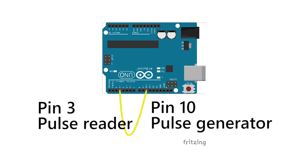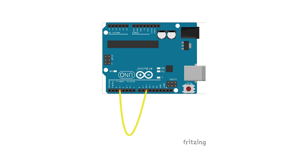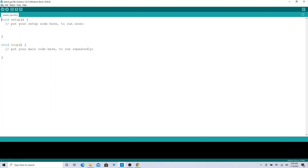In this video we'll try to generate pulses with an Arduino. We'll use pin number 10 to generate the pulses, then read the pulses from pin number 3. Hello everybody, this is Alfred, welcome to the channel. Today we will be talking about generating pulses with an Arduino.